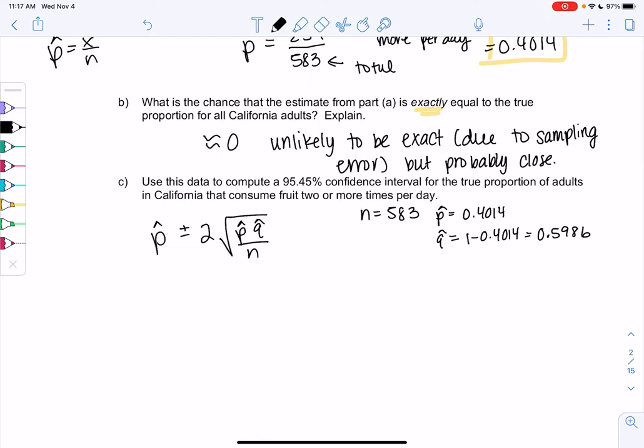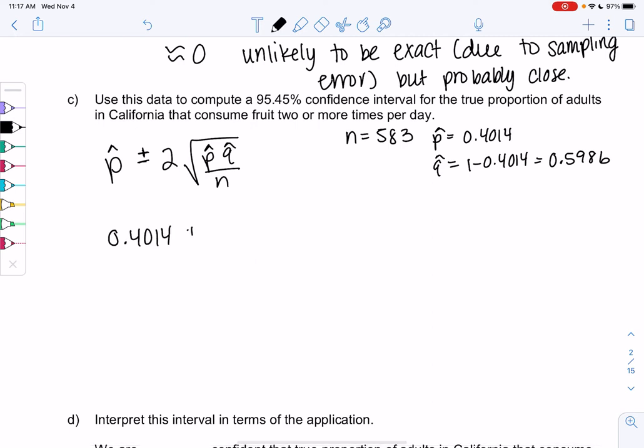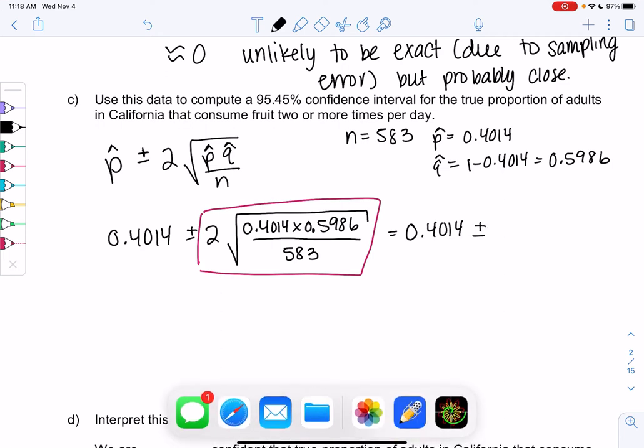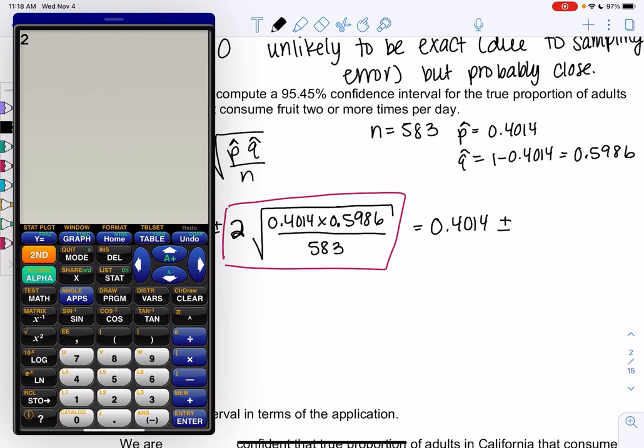If we want to find a confidence interval, we'll plug in. The plus or minus is what's creating an interval. It's giving me a lower and an upper endpoint. So we'll do 0.4014 plus or minus 2 times square root 0.4014 times 0.5986 divided by 583. And now we just have to be careful on the calculator. When I use the calculator, I usually like to do the plus or minus piece first. So we're going to do 0.4014 plus or minus, and we'll find the value on the calculator. So I'm going to type a 2. I notice students often forget the 2, maybe because it's outside the square root.